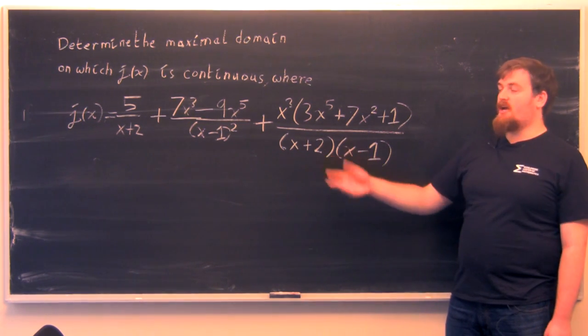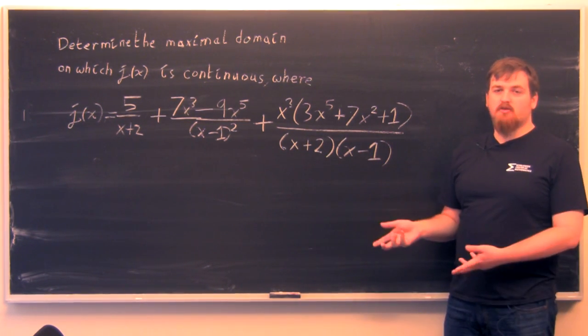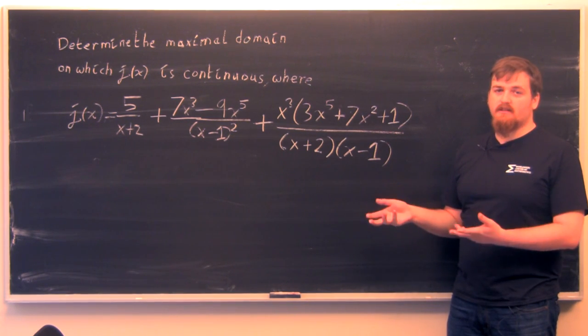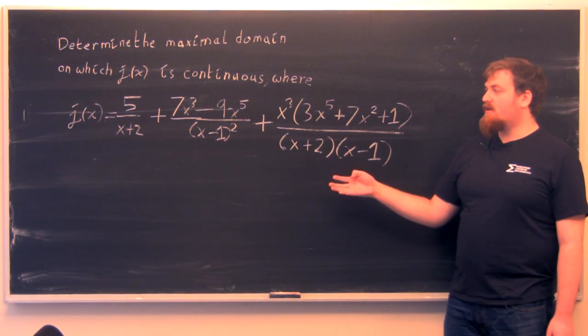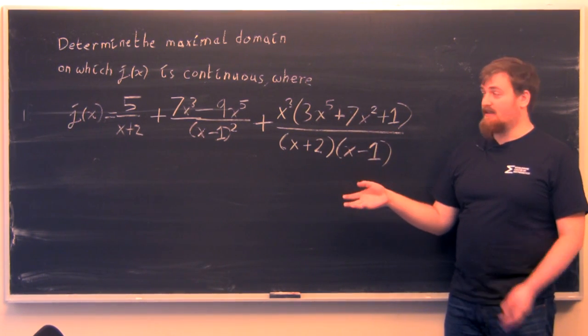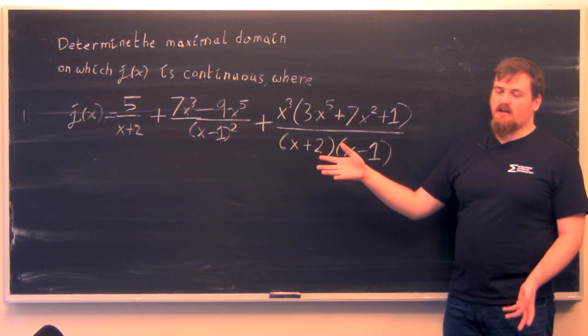In this problem, we're given this function j(x) and asked to determine the maximal domain on which j(x) is continuous. Now while it may look complicated, j(x) is just a rational function. That is, it's a sum of quotients of polynomials.